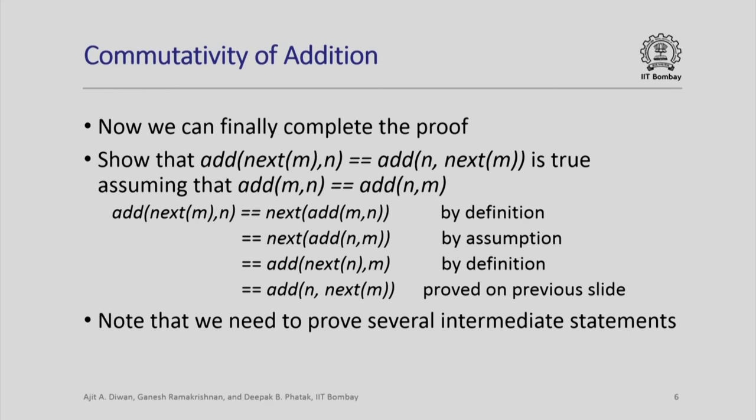Note that to prove this property we needed to prove several intermediate statements. This is true in general: if you want to prove some complicated property of numbers, you need to start by proving simpler and smaller properties, and similarly build up — just like you build functions. You prove more theorems using theorems or properties that you already know hold.